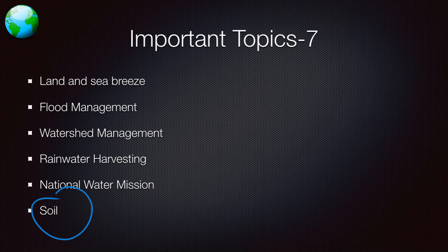Soil — again very, very important. What is the definition of soil, what are the components of soil, what are the types of soil, which soil is suited for what type of cultivation, what type of soils are found in India. What type of soil is found in Maharashtra, what type of soil is found in Rajasthan, what type of soil is found in Karnataka.